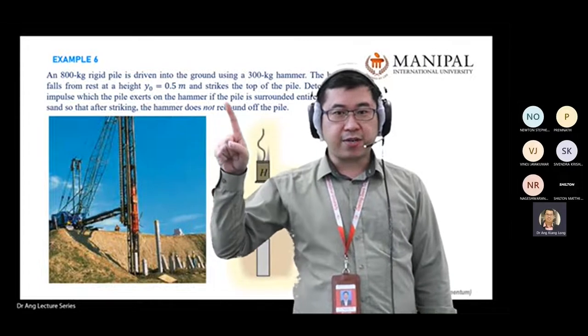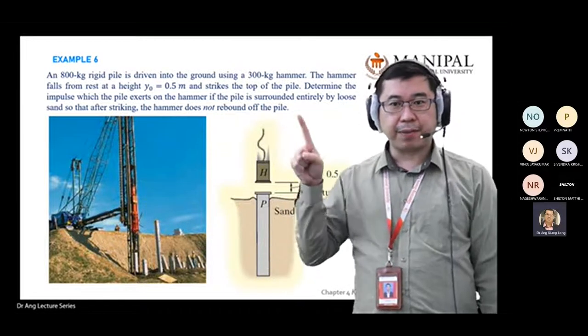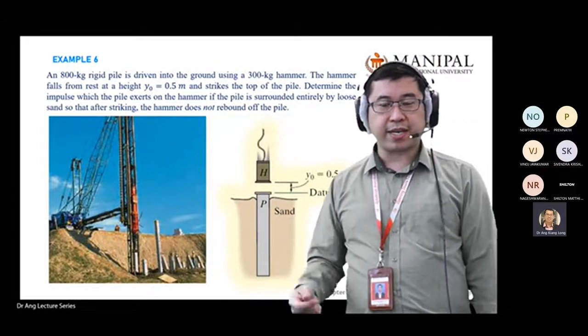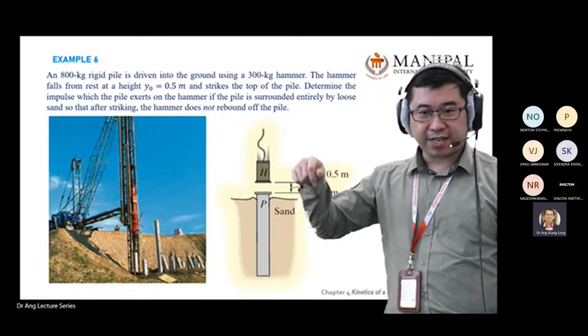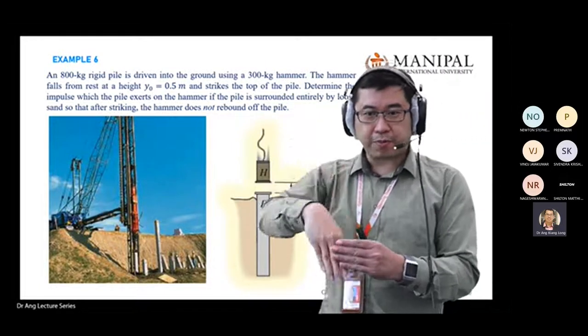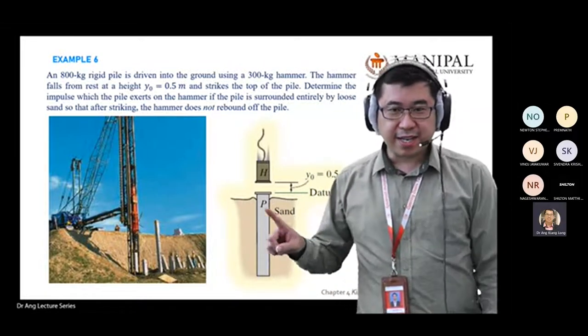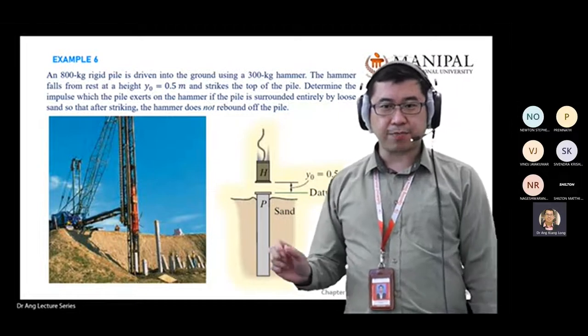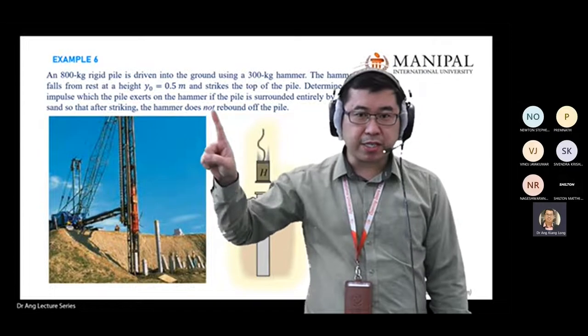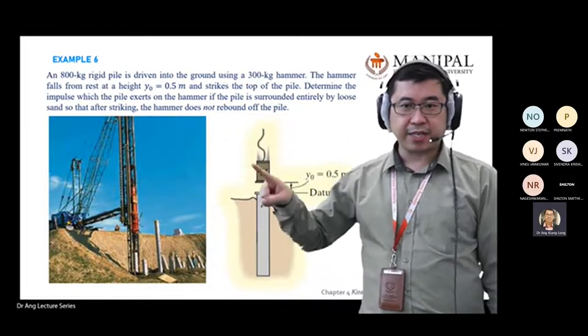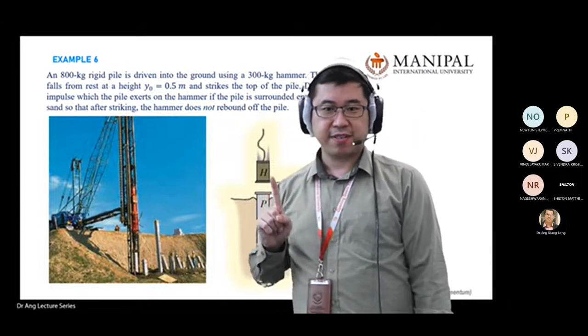The impulse which the pile exerted on the hammer if the pile is surrounded completely with loose sand. What I mean by this statement will help you to solve: if it's loose sand, is there any resistance to the object? When you put an object inside loose sand, it will accept whatever you push in, so there's no resistance. When there's no resistance, the energy is absorbed by the sand. After striking, the hammer does not rebound from the pile. This tells you the velocity after the striking.